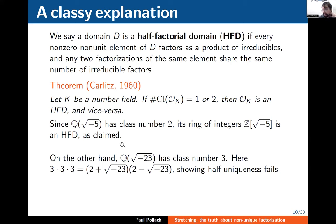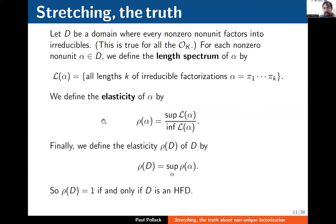Carlitz's theorem started a number of different investigations, mostly in commutative algebra. About 20 years later, there was a realization that you could take the thread of Carlitz's theorem a little further. Instead of just asking when two sides always involve the same number of irreducibles, you could measure the 'stretchiness' — if you have one factorization into irreducibles and another, how much can they differ? This also explains the strange title of my talk.